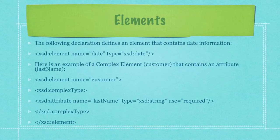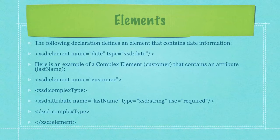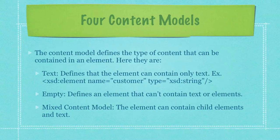The following declaration defines an element that contains date information. Here is an example of a complex element — customer — that contains an attribute being last name. Of course, you could define other attributes to this complex element. I'm just doing this so you can quickly get the idea of what an element in XML schema looks like.